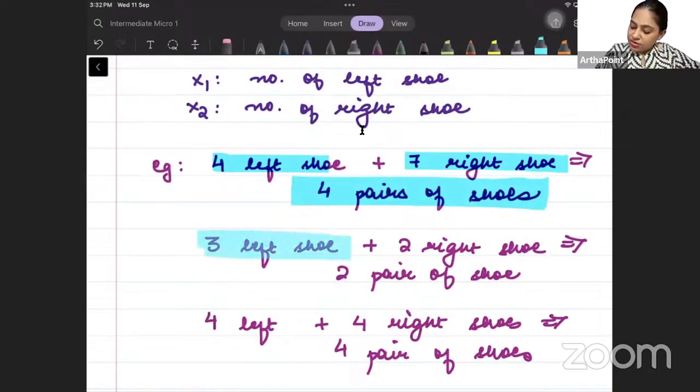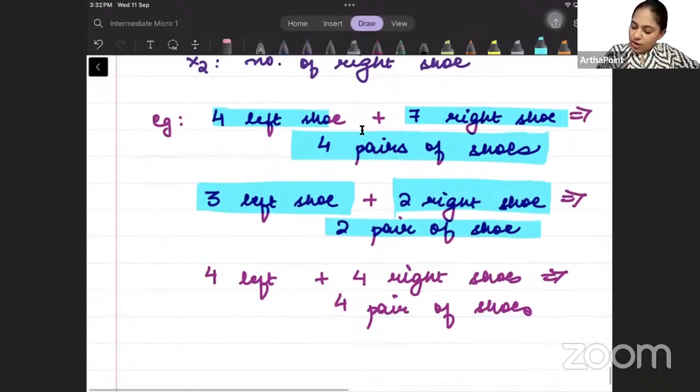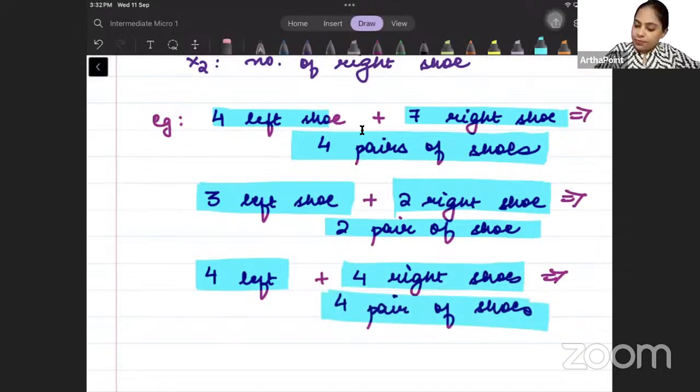Similarly, when you have 3 left shoe and 2 right shoe, then the minimum of 3 and 2 is 2. So, 2 pair ban pahe. Extra left shoe was of no use. And when you have 4 left and 4 right shoes, you have 4 pairs.